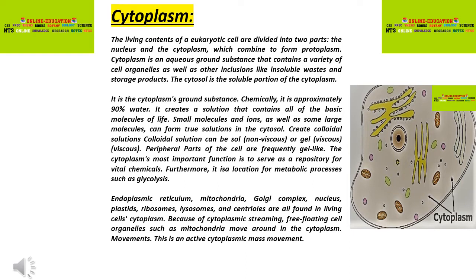We are looking at the living content of the eukaryotic cell. The living content is divided into nucleus and cytoplasm, collectively. Cytoplasm and protoplasm refer to the same thing, which consists of aqueous ground substances along with a variety of organelles and insoluble products and other storage products.